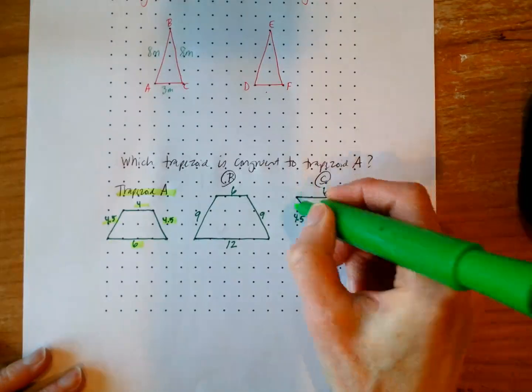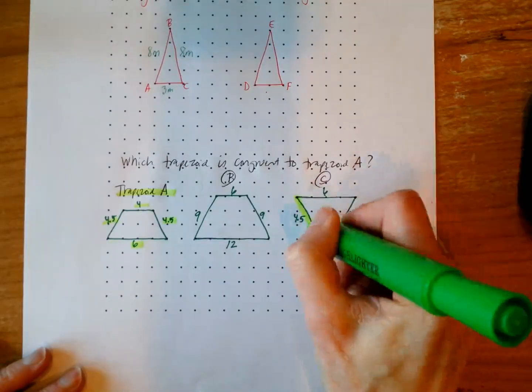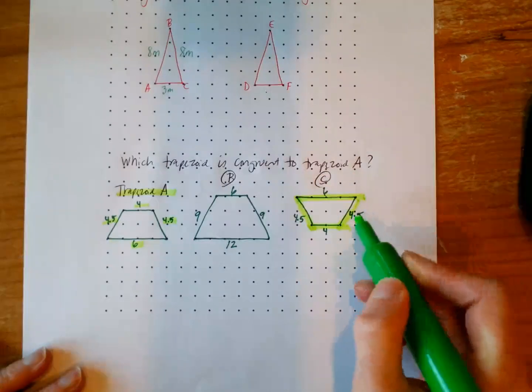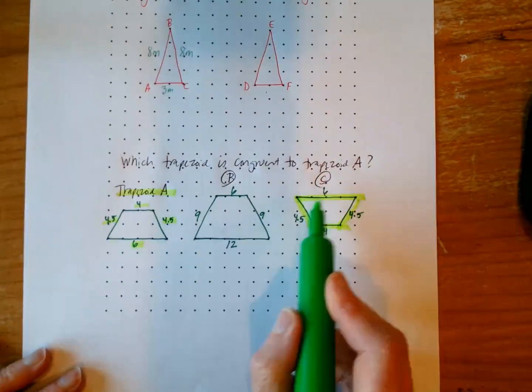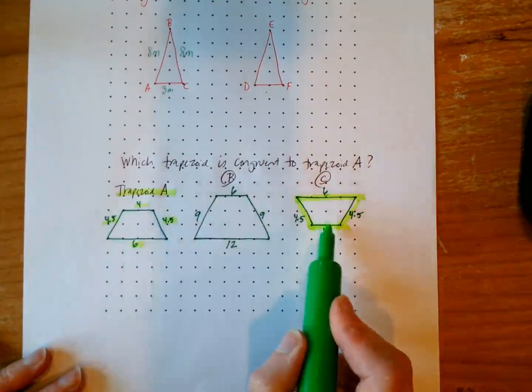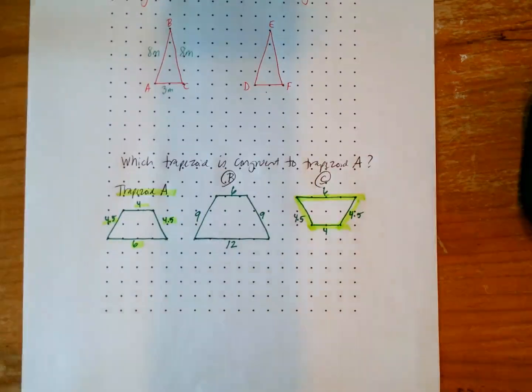Okay, this shape over here, it has been flipped. However, we can see that the sides are congruent. So six is congruent with six, four with four, four and a half, and four and a half. So as we delve deeper into 2.1, we're going to talk about some of the words that I was using throughout this lesson, flips, reflections.